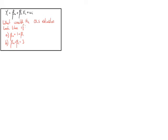Sometimes when we're estimating economic relationships using OLS, we might want to place a restriction on the values that the coefficients can take. In this exercise, we're going to look at how we might impose these restrictions. In the first example, we'll impose that the intercept is equal to 1 plus the slope parameter, and in the second part, we'll impose that the intercept plus the slope parameter is equal to 3.